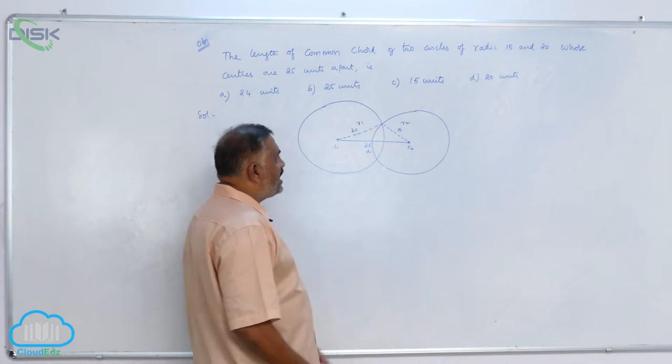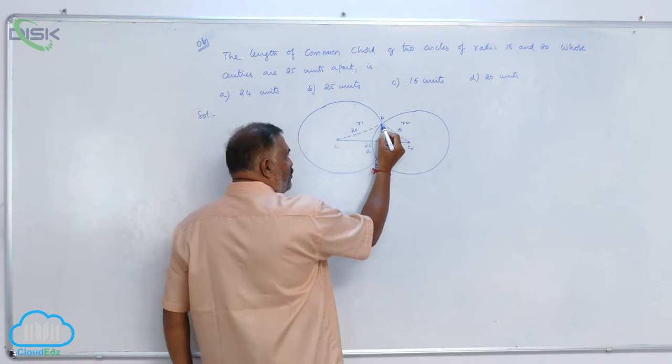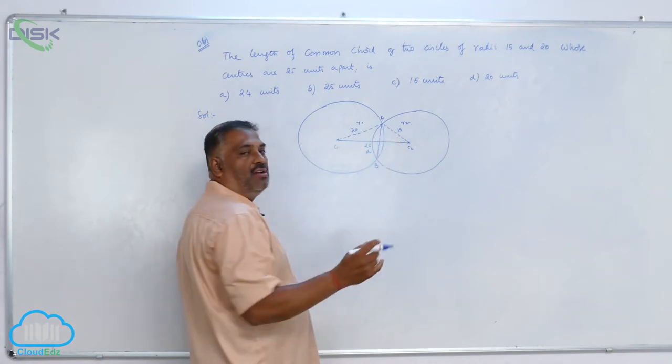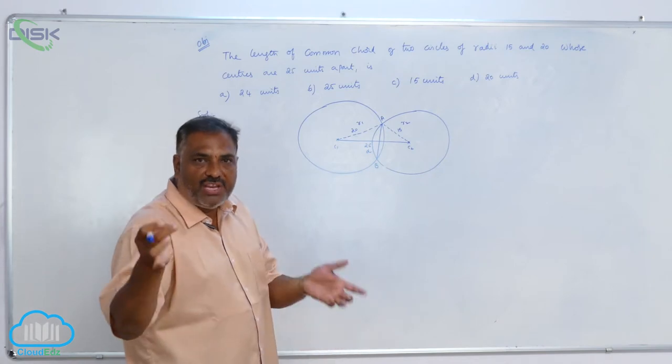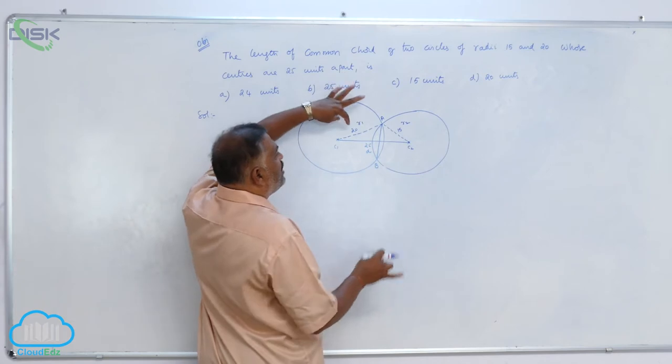We observe very carefully that there are two points of intersection A and B. If you drop a perpendicular like this, AB is called the length of the chord that we need to find out. Now, you observe one more point.